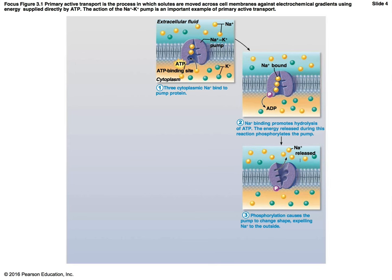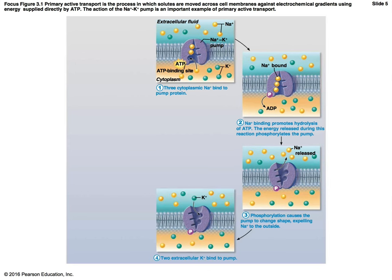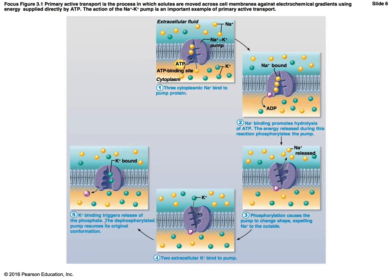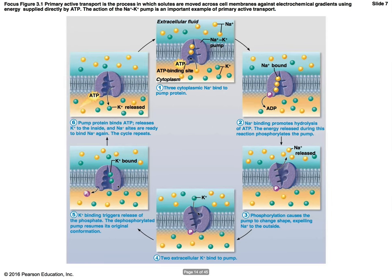Once the sodium is expelled, potassium ions come and bind on the opposite end of the protein. When both potassium ions bind, this causes the release of the phosphate group that started the reaction. Once the phosphate is released, the potassium is also released from the pump and enters the cell. The protein returns to its original conformation, and then more sodium ions bind to continue the cycle.